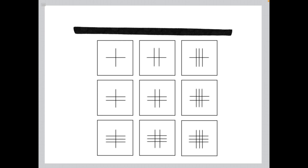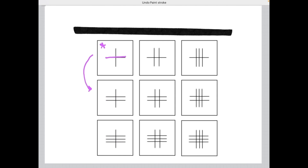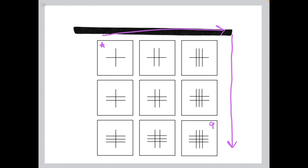Let's do an example. In this two-by-two matrix, starting at element one and taking one step to the right adds a vertical line — going from one to two vertical lines. Taking another step right adds another vertical line, giving three. Taking one step down from element one adds one horizontal line, going from one to two. Another step down gives three horizontal lines. To find missing element nine, start at element one, take two steps right and two steps down, adding two vertical and two horizontal lines, giving three vertical and three horizontal lines total.